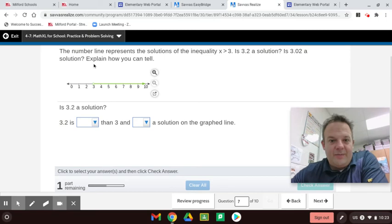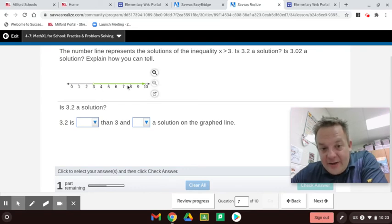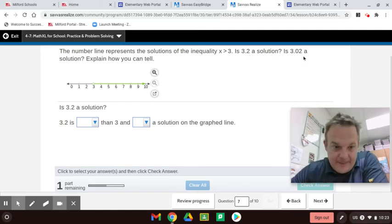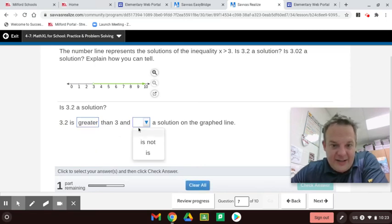The number line represents the solutions of the inequality X is greater than 3. Is 3.2 a solution? Is 3 and 2 hundredths a solution? Explain how you can tell. So, yeah. This is an open circle. So, it does not include 3, but it would include anything greater than 3. And I'm not just talking about 4 here. I am talking 3.2 or 3.1 or 3 and 2 hundredths.